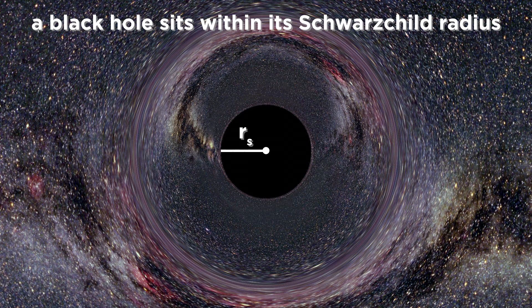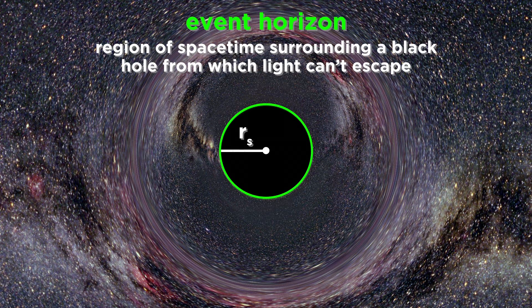So we know that all the material in a black hole is contained within its Schwarzschild radius, and there is a related term for describing this radius, which is called the event horizon.